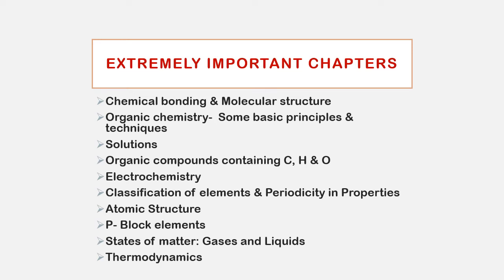The Classification of Elements and Periodicity in Properties chapter is easy but confusing — it requires multiple revisions. The periodic table must be memorized neatly. At least the first 30 elements should be known. P-block elements are also here; direct concept questions require repeated revision.